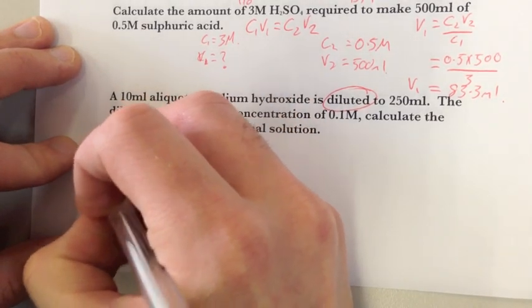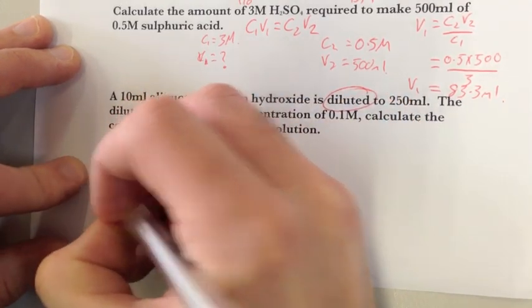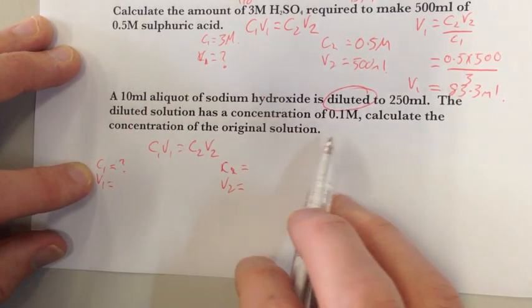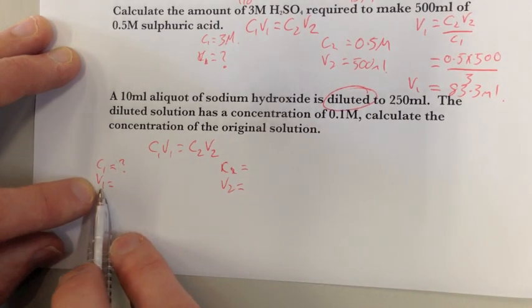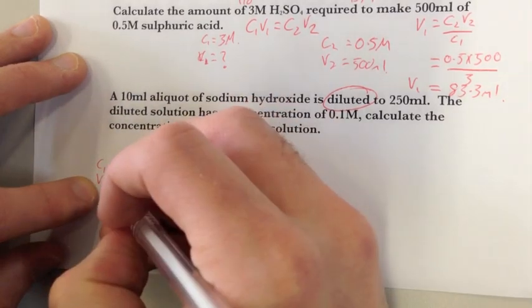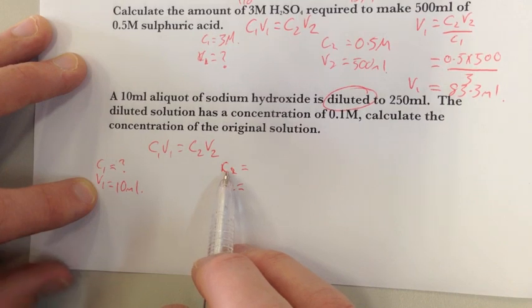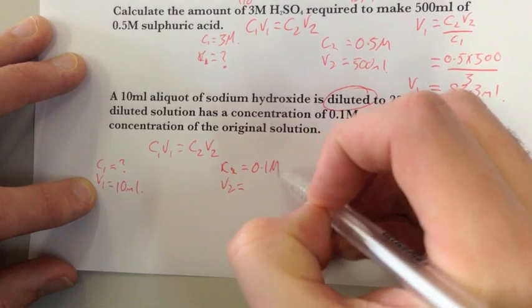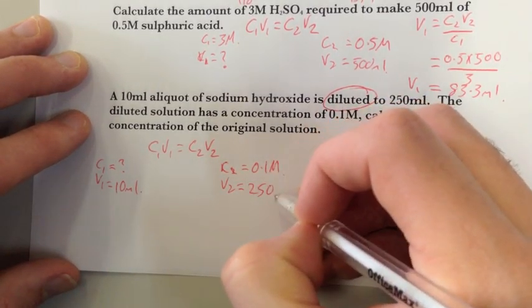So C1V1, C2V2. My initial concentration, I don't know. Calculate, that's what I need to actually calculate. That's what it says in the question. Calculate the concentration of the original solution. We don't know what it is. The volume of the original solution, obviously we have to start off with, is 10 mil. My final concentration, reading the question, the diluted solution has a concentration of 0.1 molar, and it's been diluted to 250 mil. So my final volume is 250 mil.